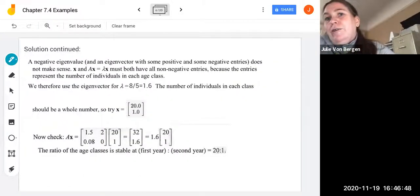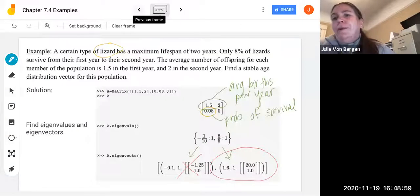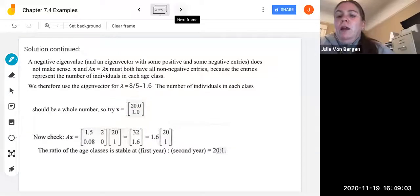All right, so a negative eigenvalue and an eigenvector with some positive and negative entries does not make sense here. x and Ax equals lambda x must both have all non-negative entries because the entries represent the number of individuals in each age class. So we therefore are just going to use the eigenvalue for eight-fifths or 1.6. You can do it fraction or decimal. When we calculate the number of individuals in each class, that should be a whole number. So in our case, that eigenvalue came out as a whole number. Just be aware sometimes if you're using a TI calculator or doing calculations by hand, you might get decimals like 19.9 or something here. So remember, you may need to round up to whole numbers when you're doing calculations.